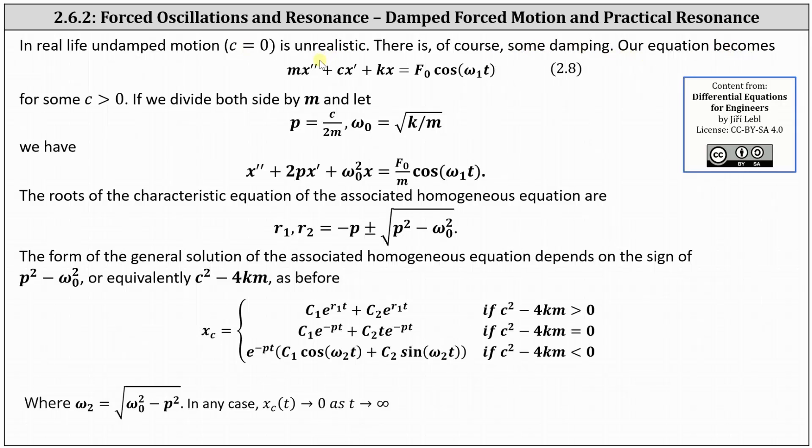Going back to our equation, mx double prime plus Cx prime plus Kx equals big F sub zero times cosine of omega one T, where M is the mass, C is the friction or damping constant, K is the spring constant, and F sub zero times cosine of omega one T is some outside force acting on the mass.